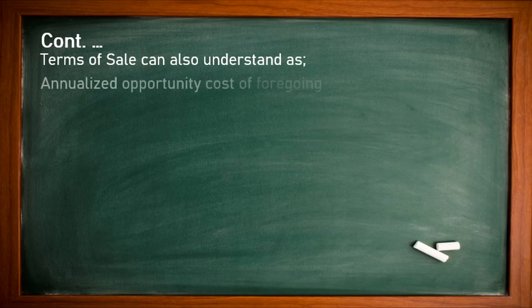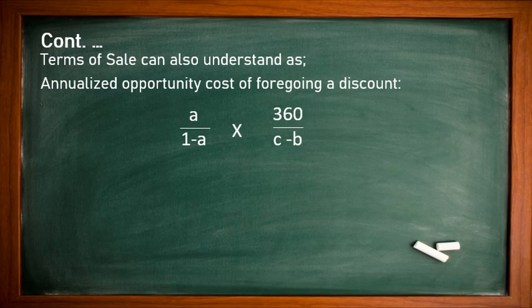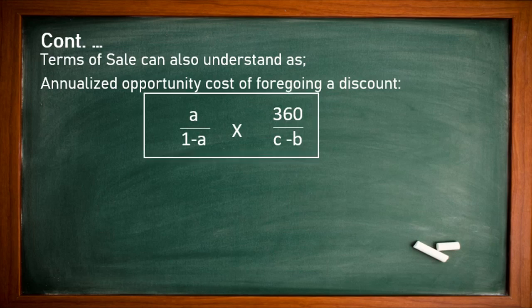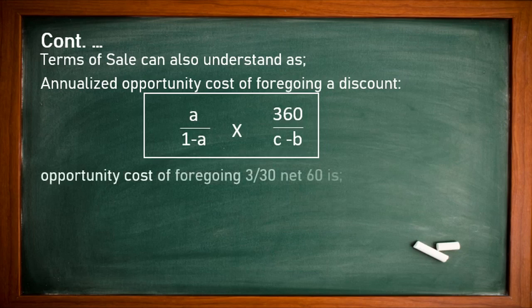The terms of sale can also be analyzed as the opportunity cost of forgoing a discount. The formula is: A divided by (1 minus A), multiplied by 360 divided by (C minus B). This formula is used to calculate the actual discount percentage that companies are effectively offering to their customers.